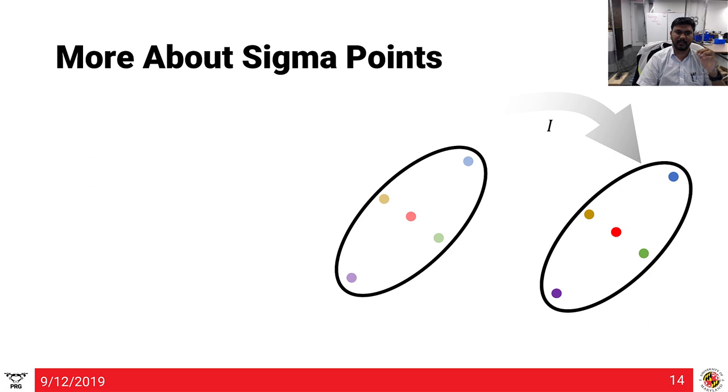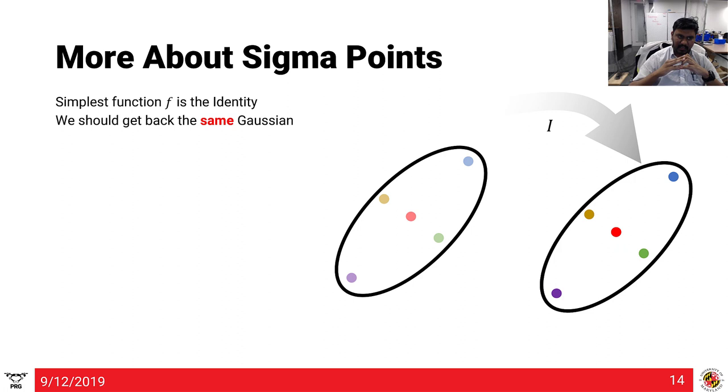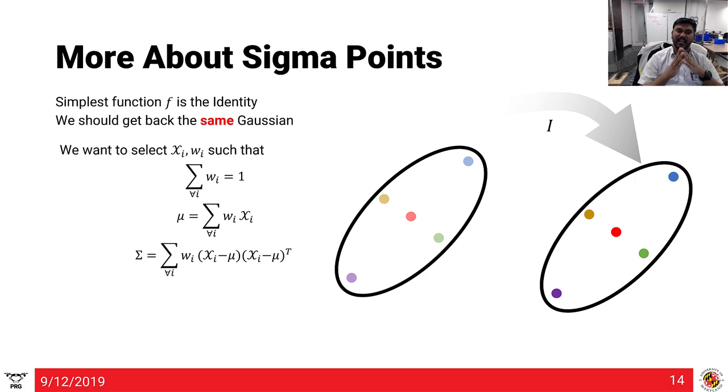Now let's talk more about the sigma points. Remember we did this transformation. The simplest function f is the identity - we should get back the same Gaussian. We want to select our sigma points and weights w such that the sum of all weights is 1, the mean is computed as the weighted sum of sigma points, and the covariance is the empirical covariance along with the weight. There is no unique solution for this - there can be any number of solutions.